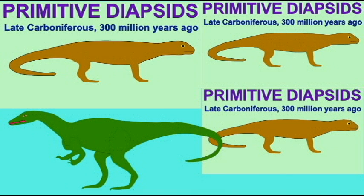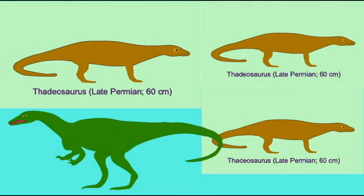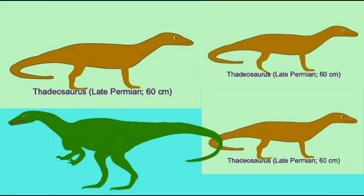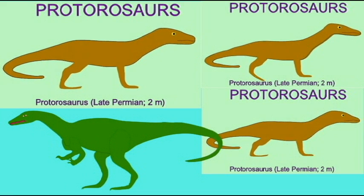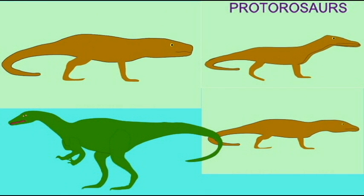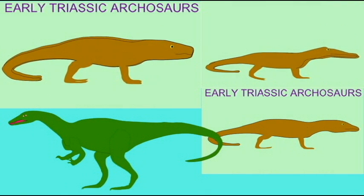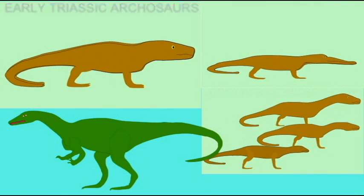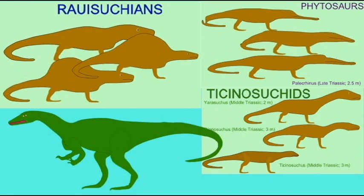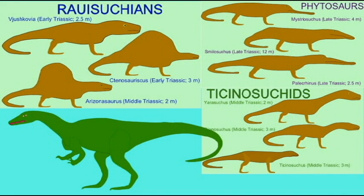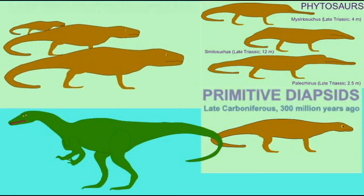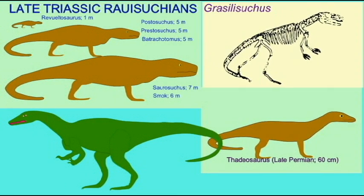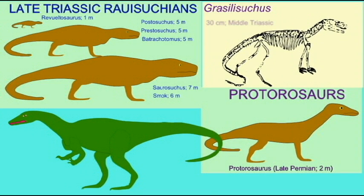The end Triassic extinction had such a great effect on terrestrial life. The Archosaurs, the ruling reptiles, were very hard hit, with many groups of early crocodiles wiped out. The Phytosaurs wiped out. The huge Rauisuchians, which were the dominant predators on Earth at the time, wiped out. So many other groups of Archosaurs, such as Aetosaurs, were wiped out.